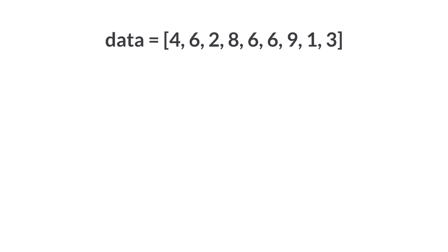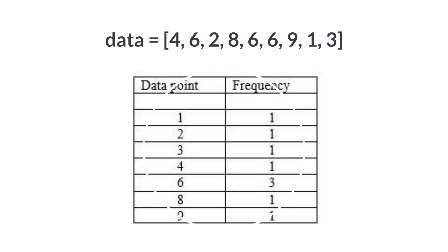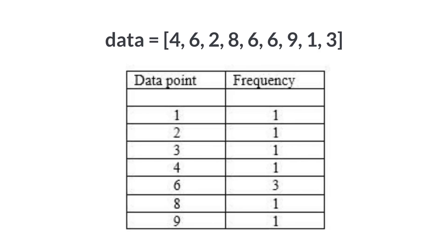So for our dataset, the frequency of every number is as follows. The number with the highest frequency is 6, and hence the mode is 6.